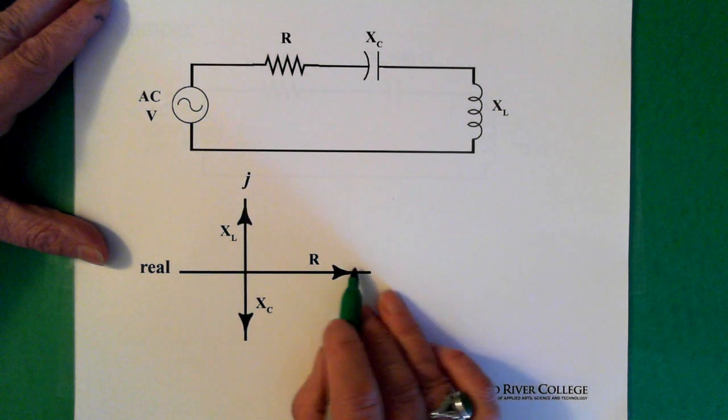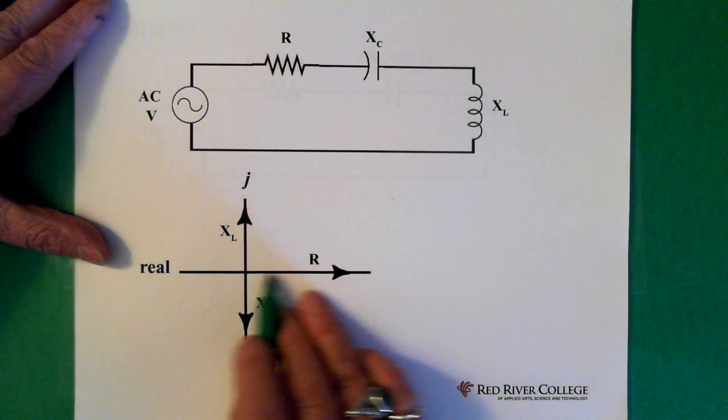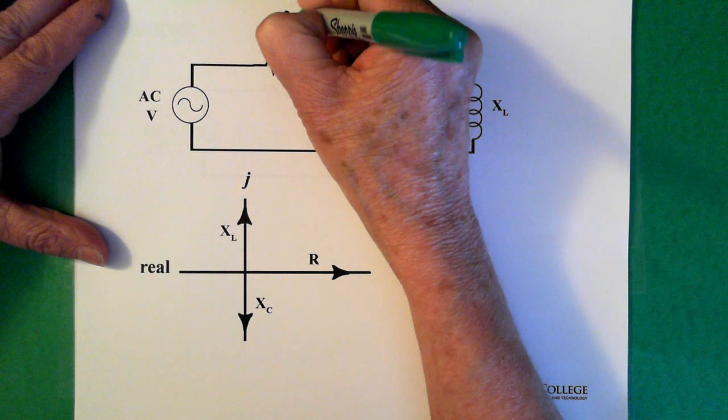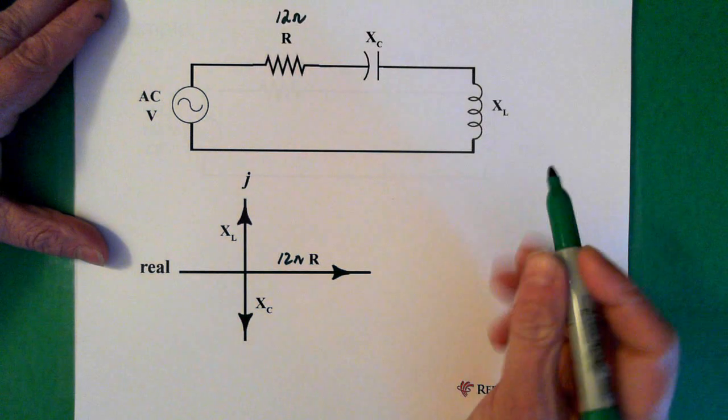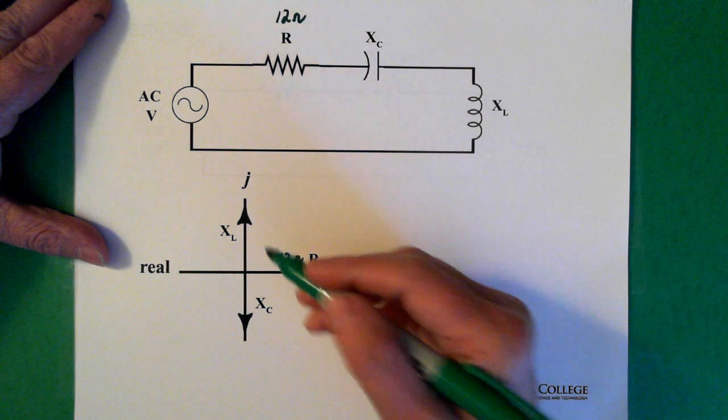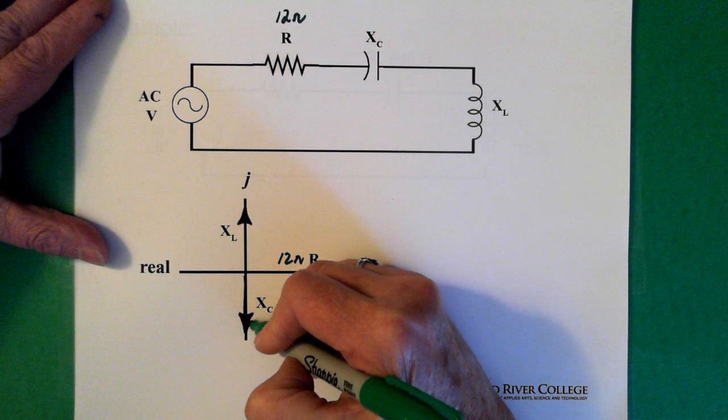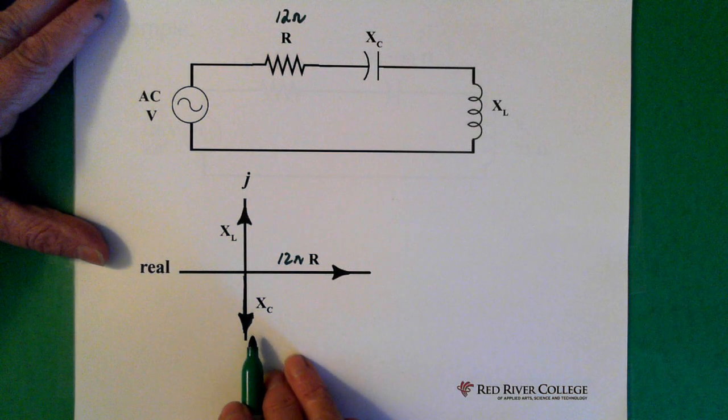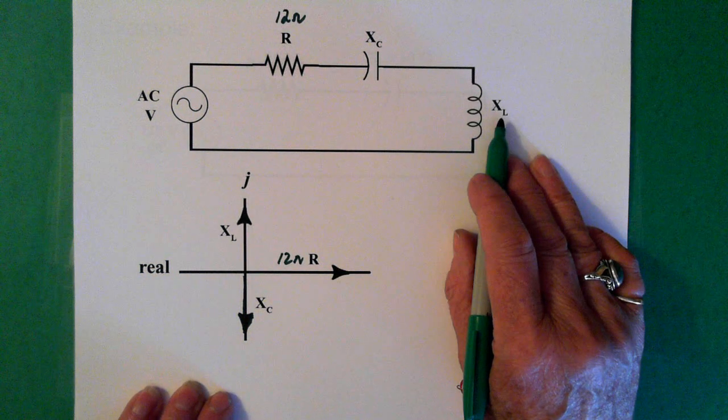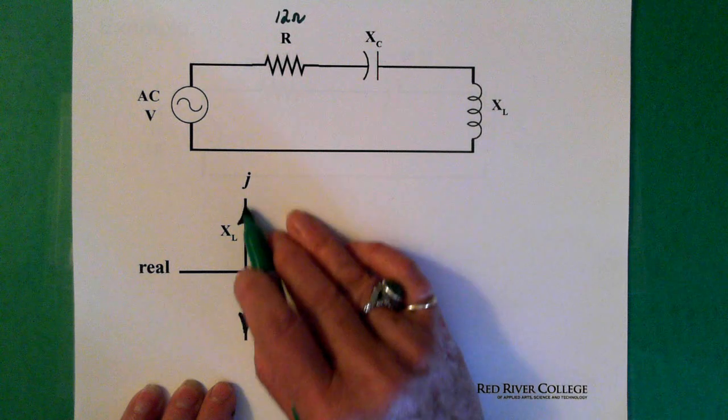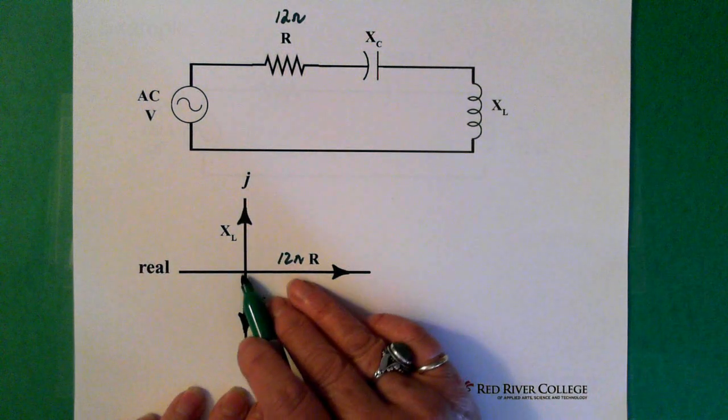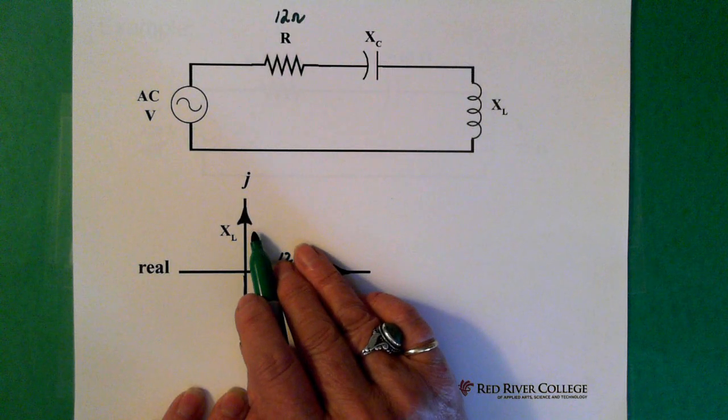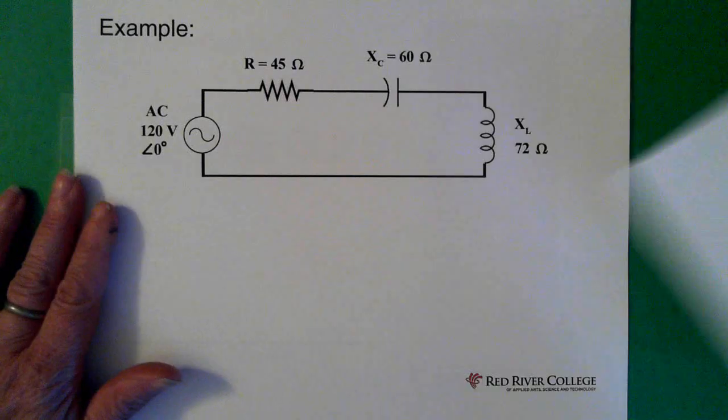What we do is we put them on the x and y axis. So the resistor is what we call real and it goes on the real axis. So whatever amount that resistance would be, let's say it's 12 ohms, that 12 ohms would be here. Our Xc goes on the y axis and it goes in the negative direction. So whatever amount we have there, that's shown up here or drawn here. Our inductive reactance is on the y axis as well, and it's in the positive direction. So if we had a number there, we'd write it down here.